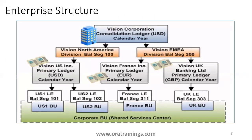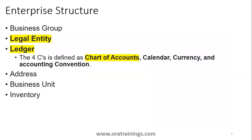Here, if you observe in this example, Vision US Incorporation primary ledger is assigned to US one legal entity as well as US two legal entity, with a different balancing segment. They have their respective business units also. Basically, a ledger maintains four Cs — nothing but chart of accounts, calendar, currency, and accounting convention.